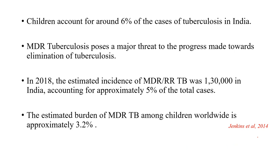A big problem is multi-drug resistant tuberculosis — MDR, XDR, and pre-XDR. We have new drugs like Bedaquiline and Delamanid added to our armamentarium. Bedaquiline is doing wonders in MDR TB management — recovery has improved from around 30-35% to around 80%. We can give this drug over the age of 6 years. Delamanid is not yet available in India but is expected in 6 months to 1 year.